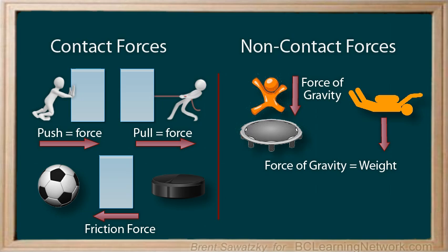Another non-contact force is magnetism. If you bring magnets close together, they move each other — either avoiding each other or jumping together, depending on the poles. No contact is required to make the force appear. In fact, one of Albert Einstein's first interests in science was the mysterious non-contact force he observed with magnets.